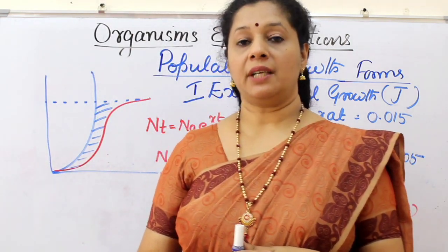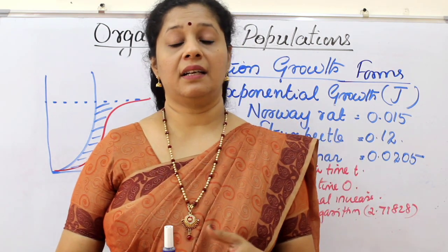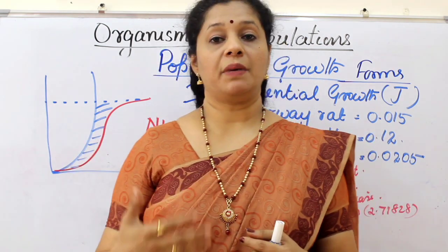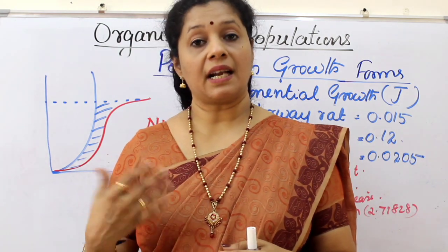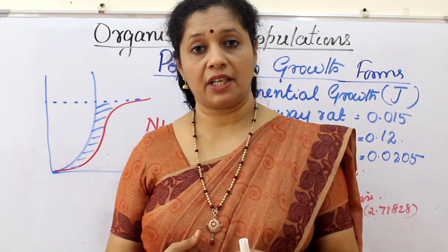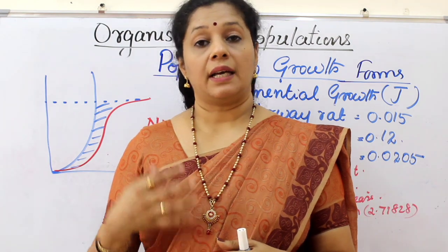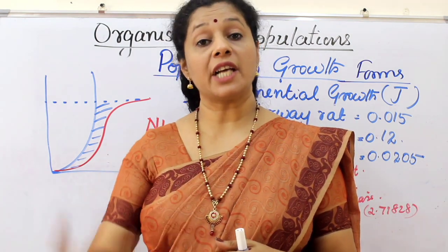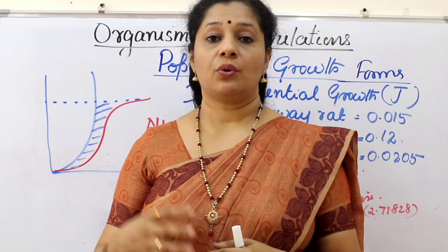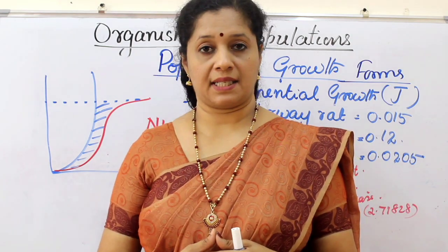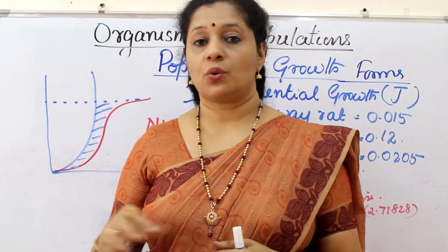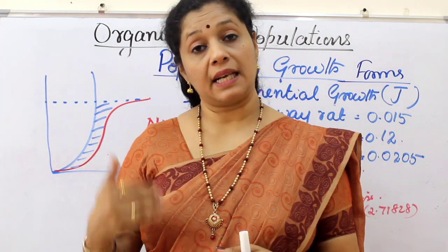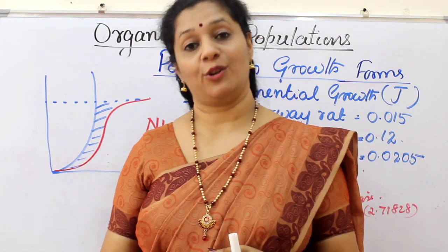As mentioned, exponential growth is an ideal situation — for it to happen, resources must be unlimited. But unlimited resources do not exist in nature, because the environment has its own parameters to check population growth. The environment has a carrying capacity that will limit the growth, so the J-shaped exponential curve is only an ideal kind of growth curve. The more realistic one is the logistic growth curve.